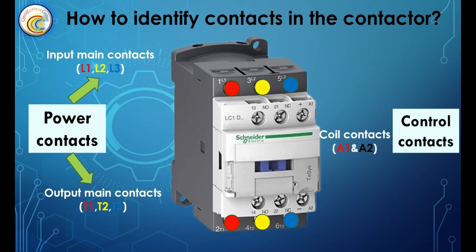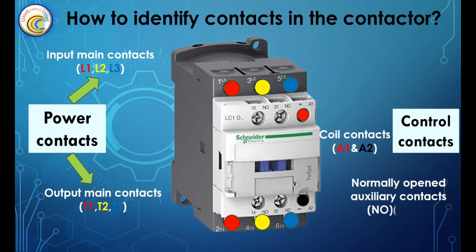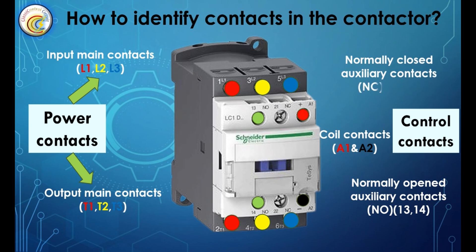Normally open auxiliary contacts are labeled N.O., or terminals 13 and 14. Normally closed auxiliary contacts are labeled N.C., or terminals 21 and 22.